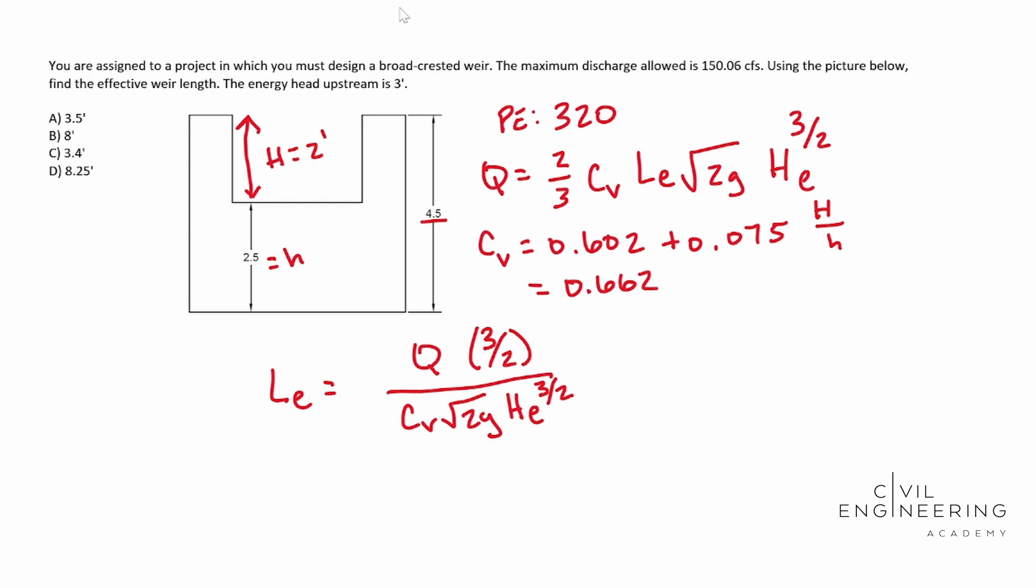So let's plug in our goodies that we know. Our Q is going to be 150.06. Multiply that by the three halves there. And then we put that over our CV value, which is 0.662. And then we take the square root of gravity. So that gravity, by the way, that's a good number to memorize: 32.2 feet per second squared.